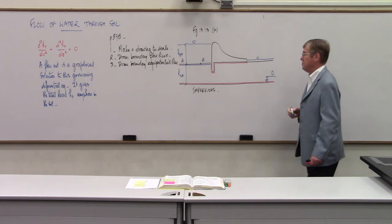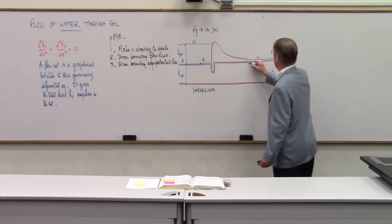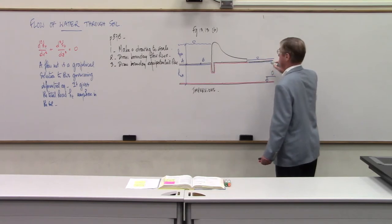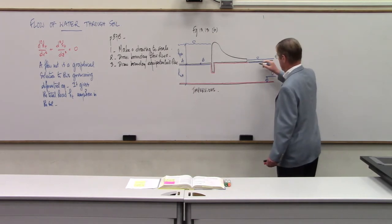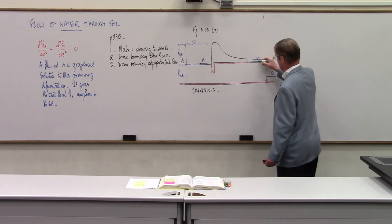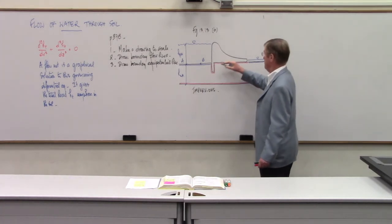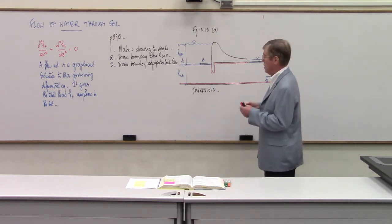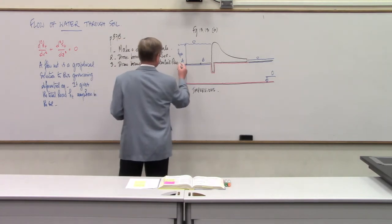The other boundary equipotential line is at the downstream exit of the flow net. There, the elevation head and pressure head are similarly defined, and any point on that line has the same total head. So now we have both the boundary flow lines and the boundary equipotential lines.